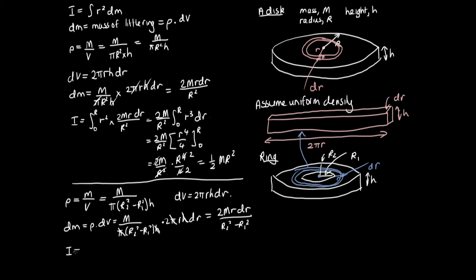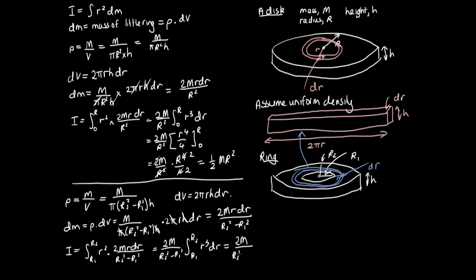For the moment of inertia of the ring, the limits on our integral go from r1 to r2, since there is nothing in the middle. So I = ∫_{r1}^{r2} r² · (2Mr dr / (r2²−r1²)). Pulling out the constants: I = (2M / (r2²−r1²)) · ∫_{r1}^{r2} r³ dr.